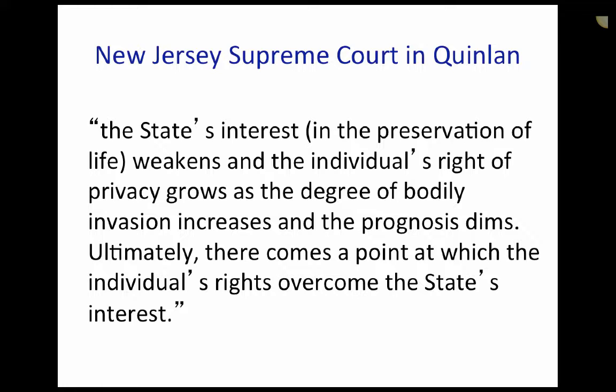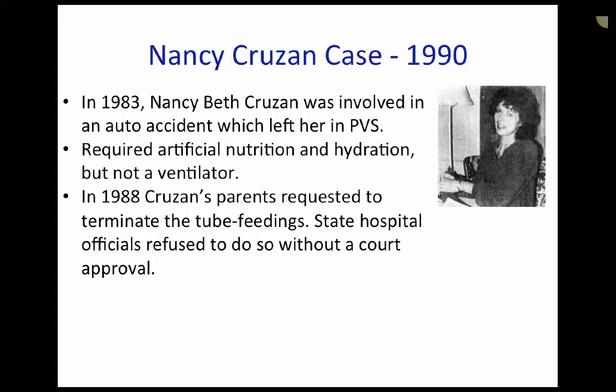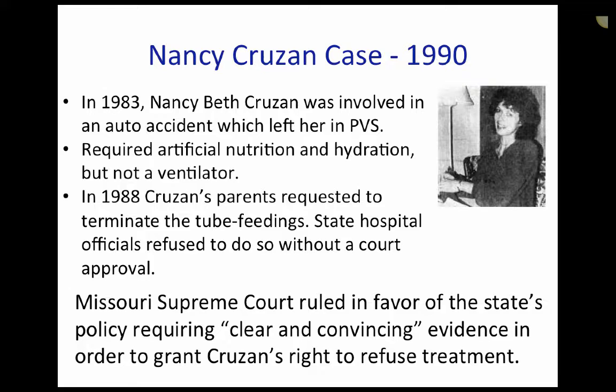The Nancy Kruzan case occurred in 1990. In 1983, Nancy Beth Kruzan was involved in an auto accident which left her in a persistent vegetative state. She required artificial nutrition and hydration, but not a ventilator. In 1988, Kruzan's parents requested to terminate the tube feedings, but the state hospital officials refused to do so without court approval. The Missouri Supreme Court ruled in favor of the state's policy requiring clear and convincing evidence of previous wishes to terminate the tube feedings in order to grant Kruzan's right to refuse treatment.